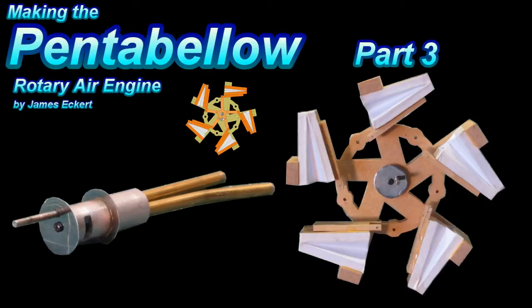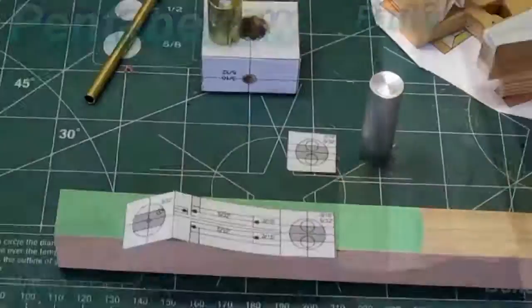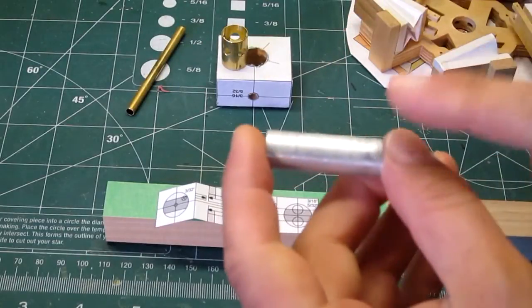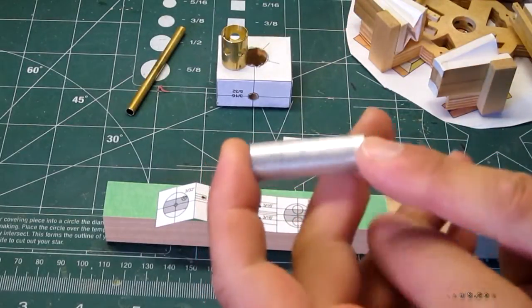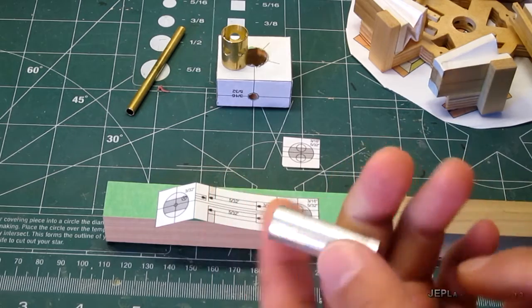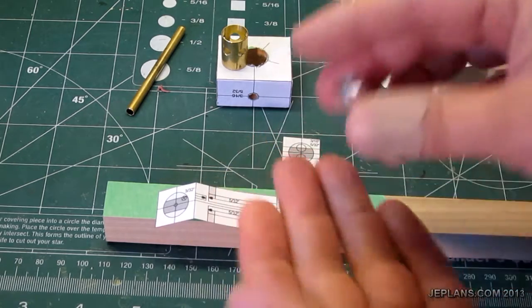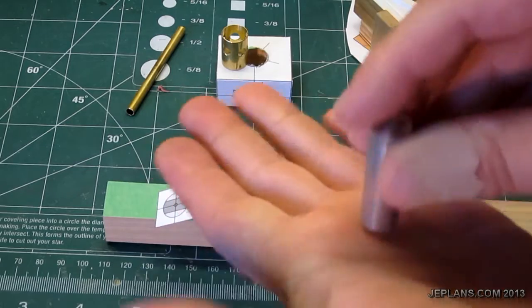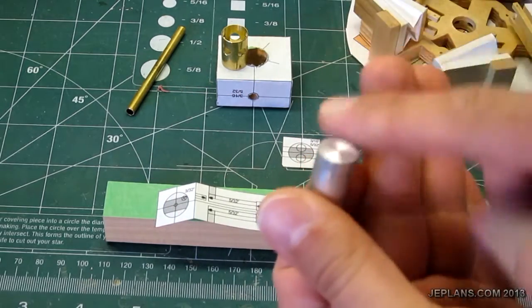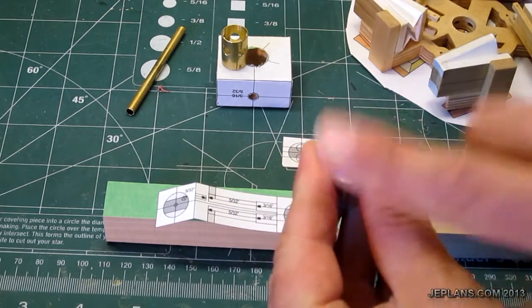Making the Pentabello Rotary Air Engine Part 3. For the main shaft in the Pentabello I have the one and a half inch aluminum rod cut. Put it in a drill press with some sandpaper to square off the ends. This end's a little better so I'll use that for the front.